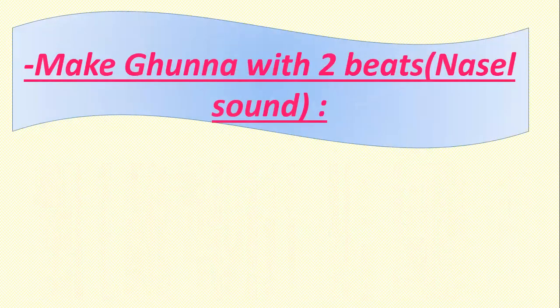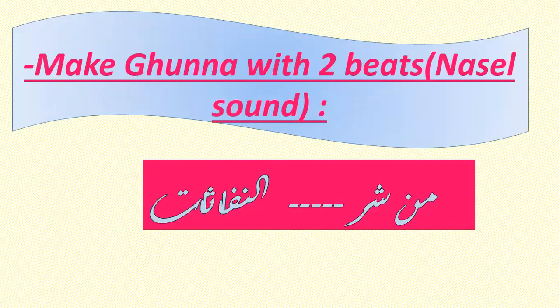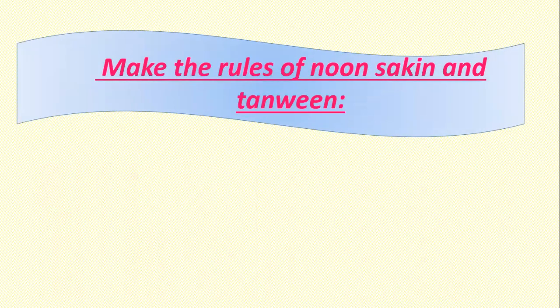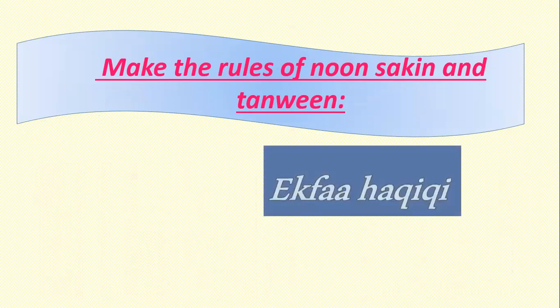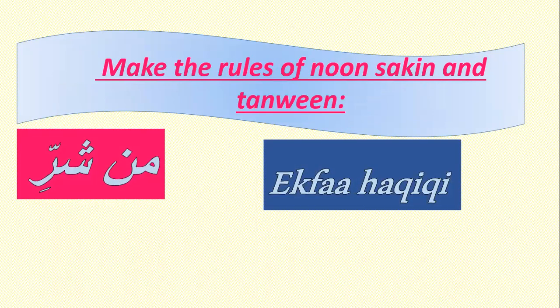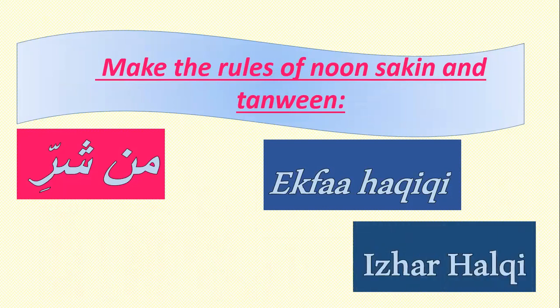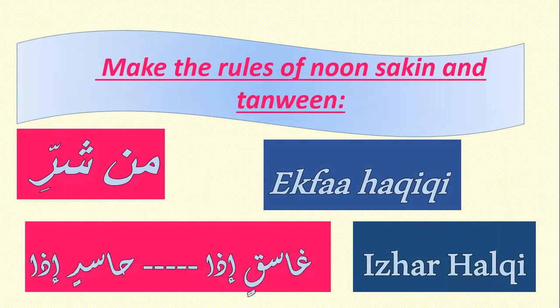Make the rules of noon sakinah and tanween. Number one: Ikhfa haqiqi — min sharri. Please repeat: min sharri. Number two: Izhar halqi — ghasiqin idha, and hasidin idha. Tanween followed by Hamza is izhar halqi. Noon sakin followed by Sheen is ikhfa haqiqi.